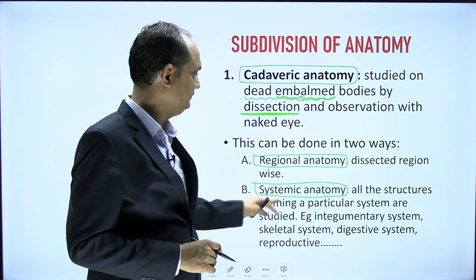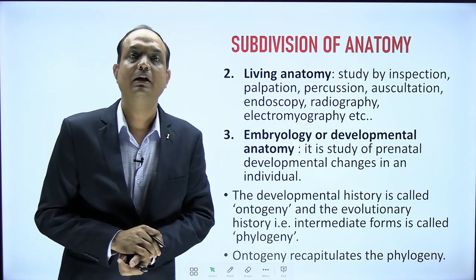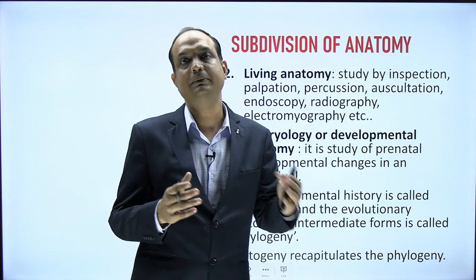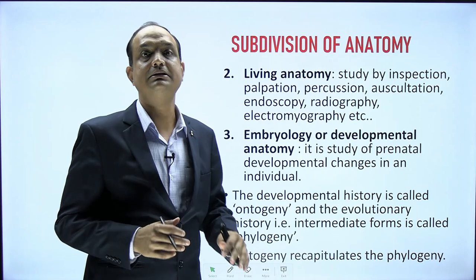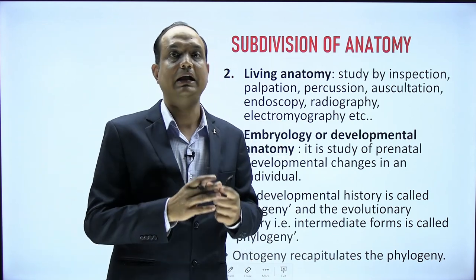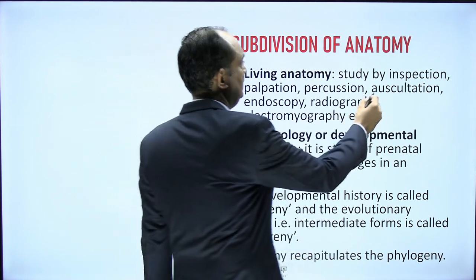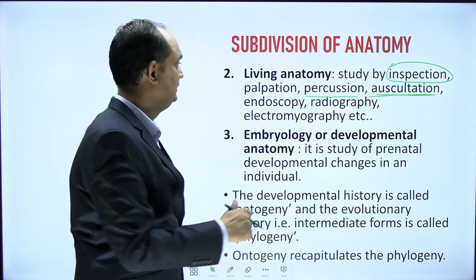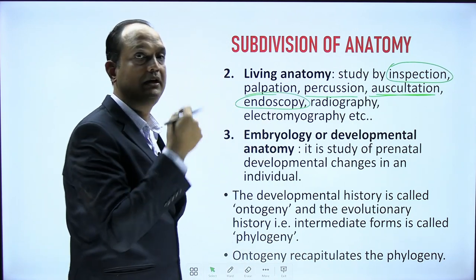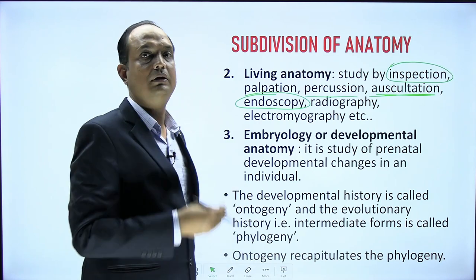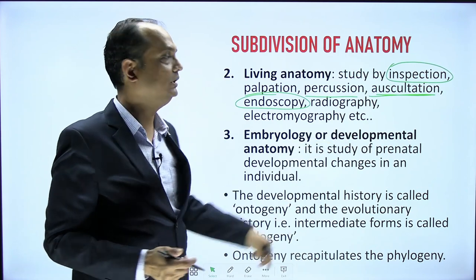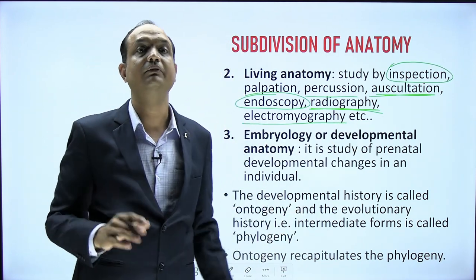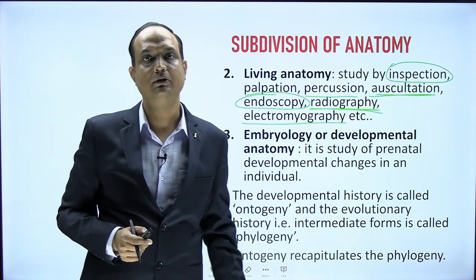Another way to study anatomy is living anatomy. It is not always necessary to learn anatomy on cadavers — you can also study it on a living person. This involves inspecting, palpating, and examining a living person. You can auscultate with a stethoscope, perform endoscopy using fiber optic instruments like an esophagoscope or bronchoscope, and use radiography with X-rays and electromyography. There are multiple ways to study a living person.